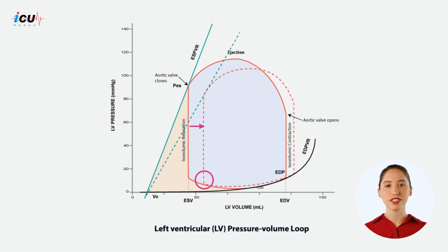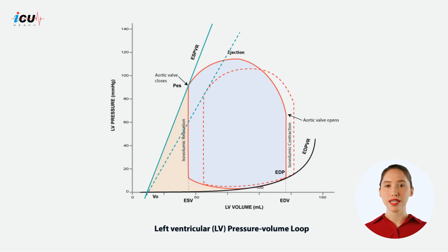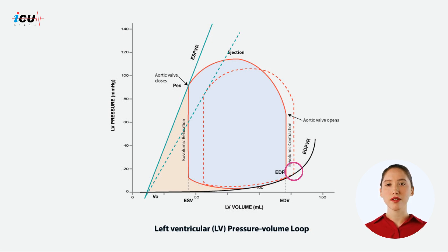More blood is left in the ventricle after contraction. At the same time, because the heart empties less efficiently, there might be an increase in end diastolic volume as the heart cycles through less complete ejections and fills. However, EDV is also influenced by venous return and ventricular compliance.